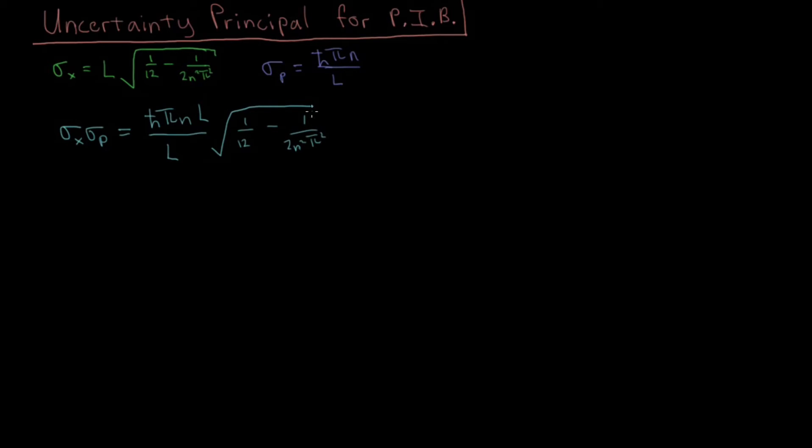But immediately we see that we can cancel out those two Ls. So the product of the uncertainties doesn't depend on L. That's good. This will be valid for all lengths of the box. But now we have this ℏπn, and for the uncertainty principle to be obeyed, what we need is the product of these two uncertainties needs to be greater than or equal to ℏ over 2. So that's just the general uncertainty principle. So this product needs to be greater than or equal to ℏ/2 for all physical parameters, every value of L, every value of n, etc.